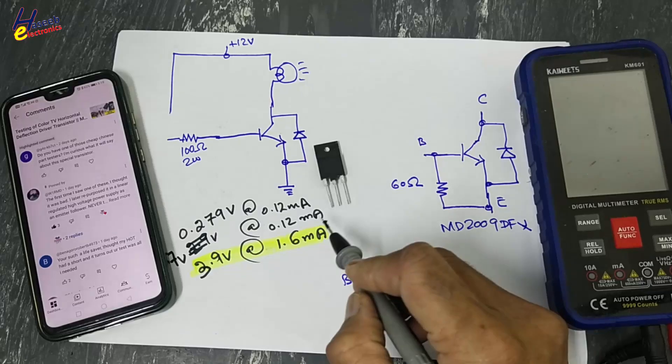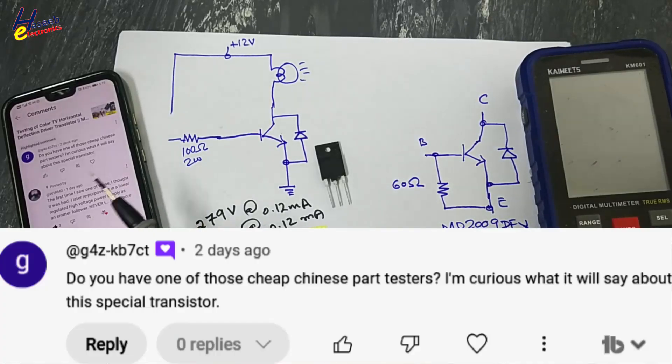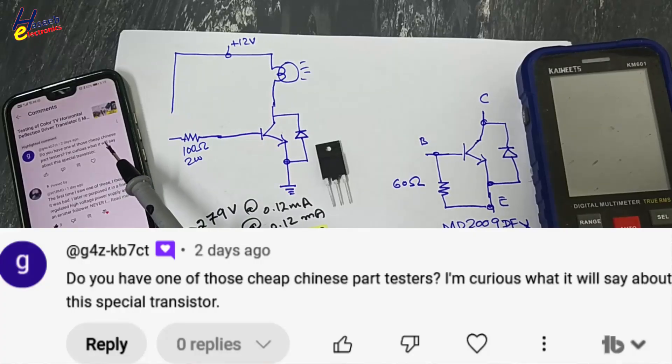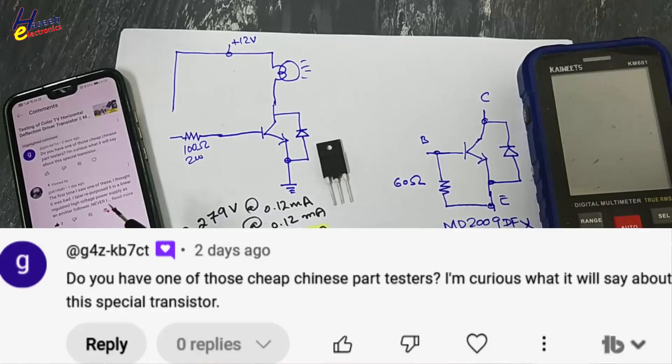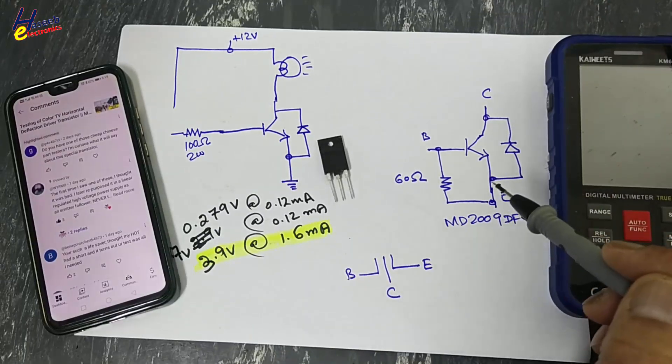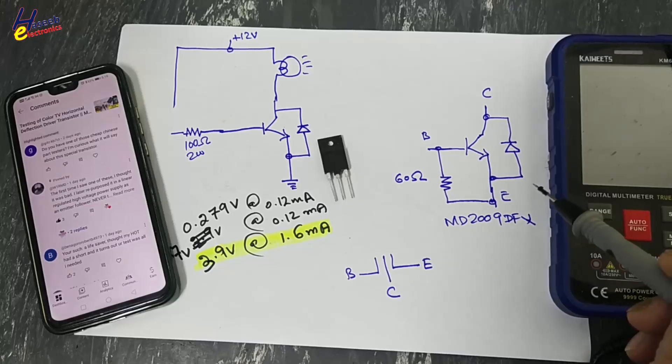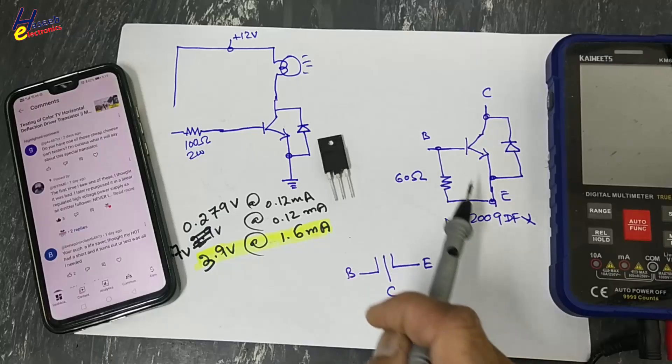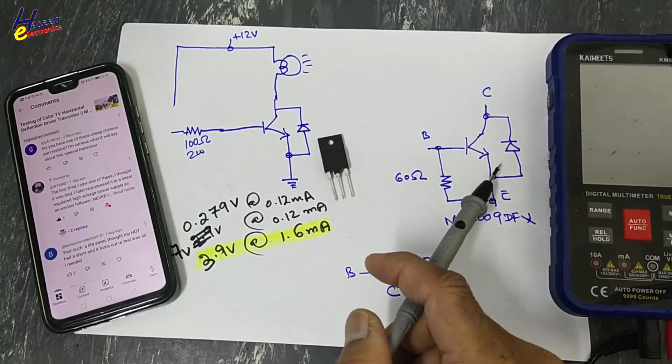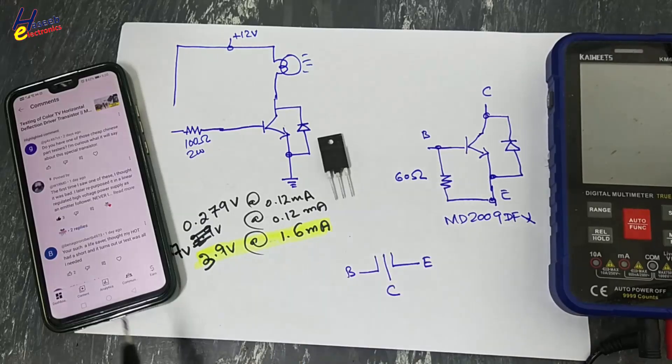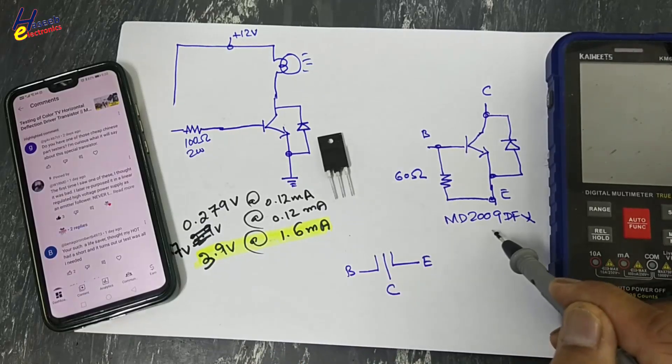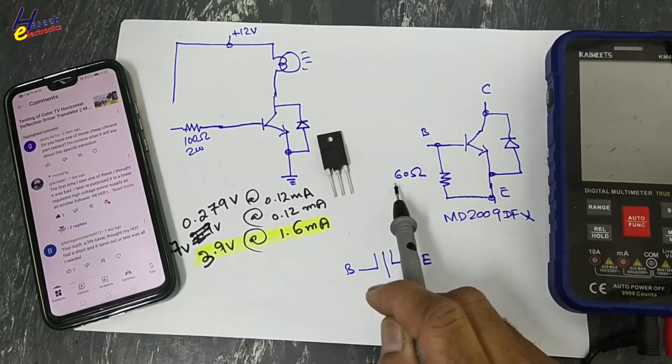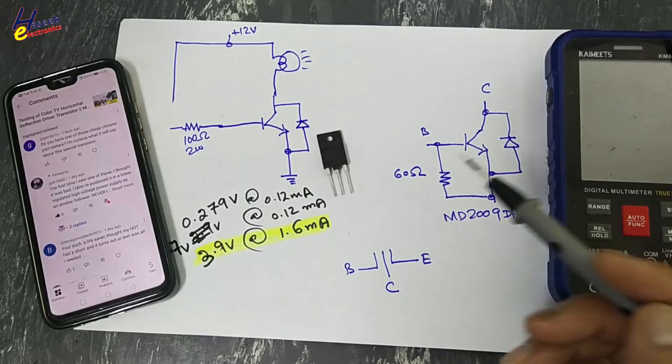I received this comment: do you have one of those cheap Chinese part testers, what will it say about this special transistor? It is a horizontal deflection driver transistor for standard definition color TVs. There is built-in resistor base to emitter and a parasitic diode freewheeling diode body diode from collector to emitter. Part number MD2009DFX. There are different transistors, some of them 20 ohms, 22 ohms, 47 ohms, also 10 kilo ohm, 2.7K based on the requirement.